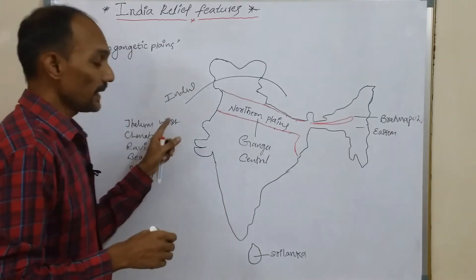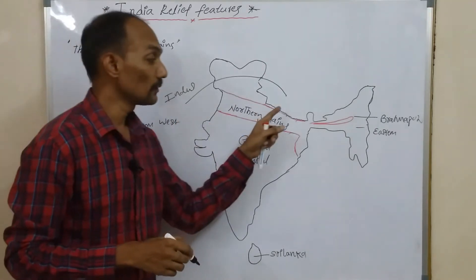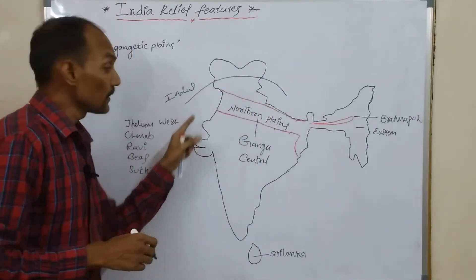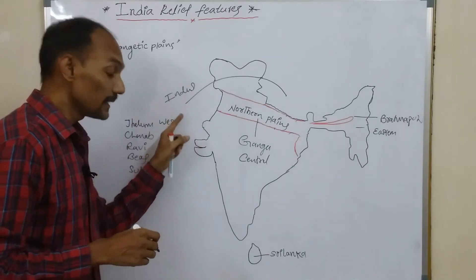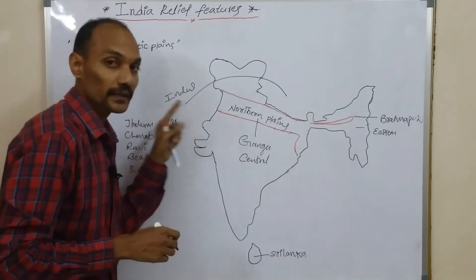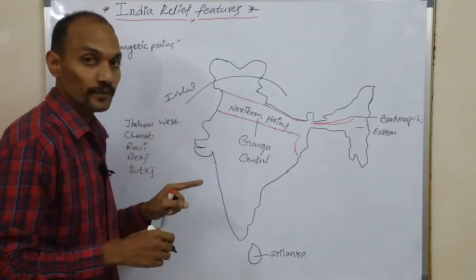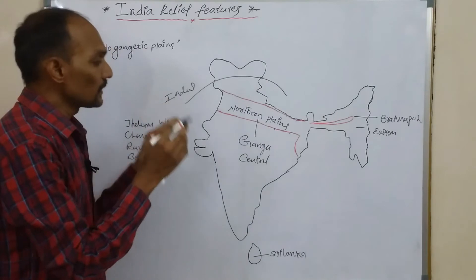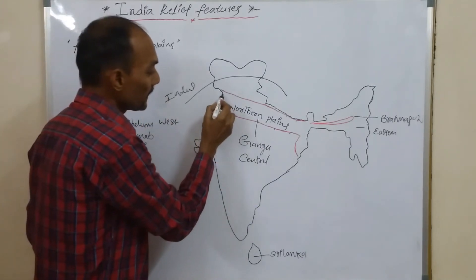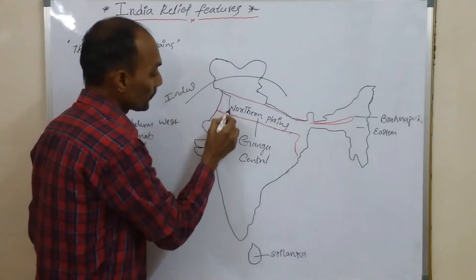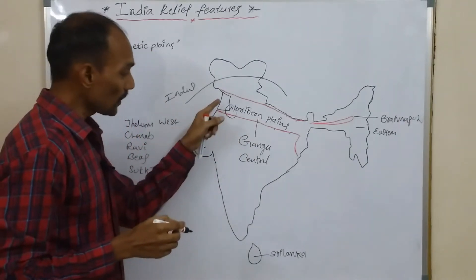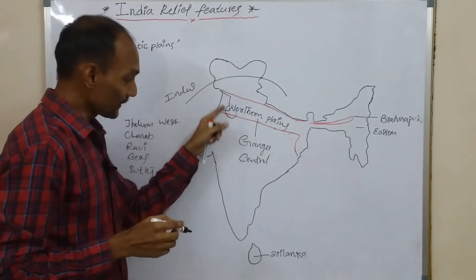The Indus River Basin mostly exists in Pakistan, which is why the Indus River is called the Lifeline of Pakistan. A minor portion also exists in India, in Punjab and Haryana.